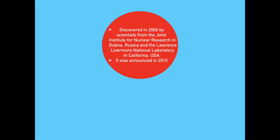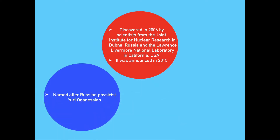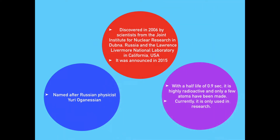It was announced in 2015 and is named after the well-known Russian physicist Yuri Organescent. With a half-life of just 0.9 seconds, it is very radioactive and only a few atoms have been made. Currently, it is only used in research and does not have any industrial purposes.